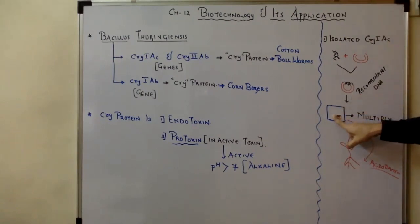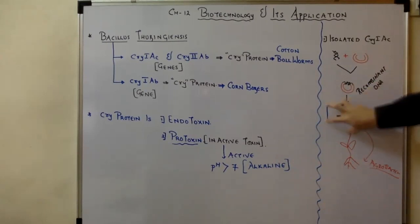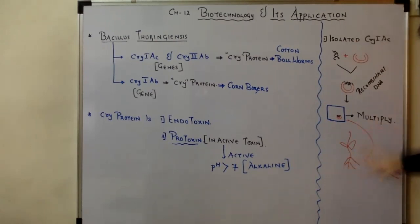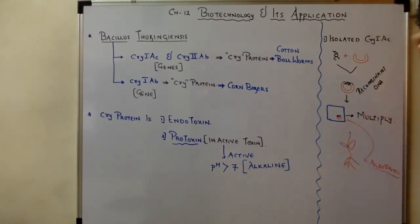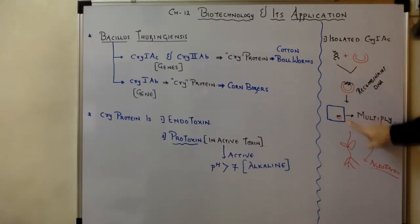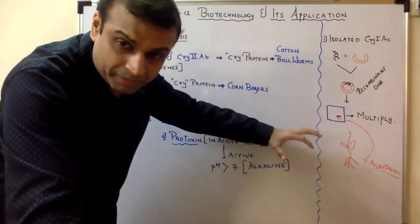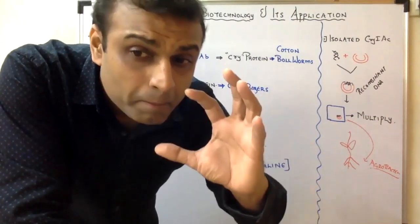We then infect the cotton plant with this Agrobacterium. Agrobacterium is a soil bacterium that infects dicot plants. When the Agrobacterium infects the cotton plant, it integrates its Ti plasmid DNA into the plant's DNA. As a result, the crystalline protein-producing gene becomes part of the plant's DNA, and the plant starts producing crystalline protein. The entire plant now becomes toxic — specifically toxic to the bollworms.